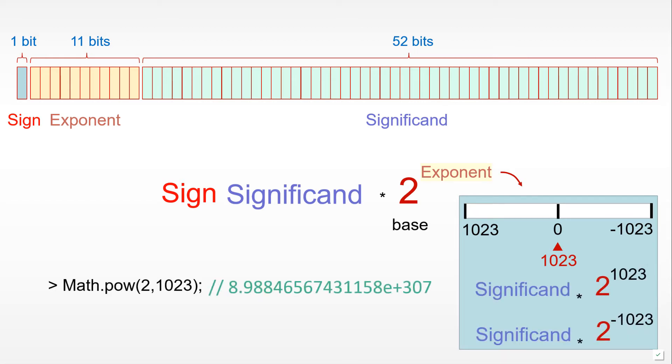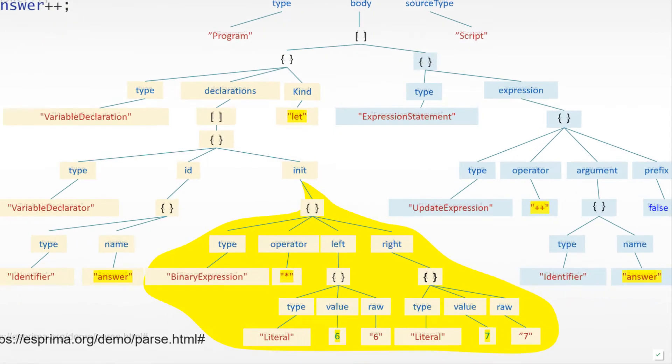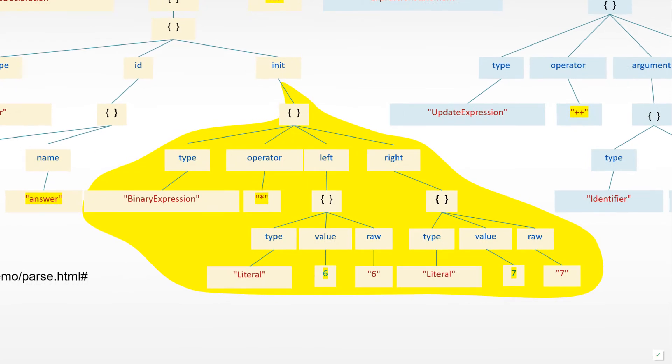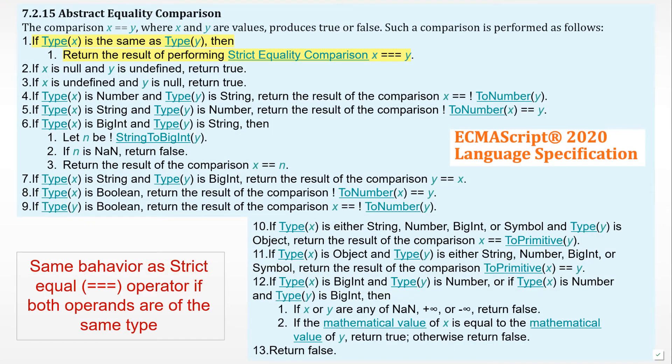At times we'll go really deep, discussing things like what is an abstract syntax tree and how it relates to our source code. We'll even peek inside the ECMAScript specification, which is where browser makers get their information about how JavaScript should behave.